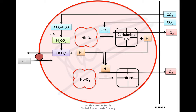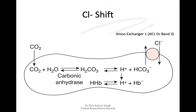There is formation of carbaminohemoglobin at the tissue level within the RBC. The carbon dioxide taken up combines with water in the presence of carbonic anhydrase — which is plentiful in RBCs — to form carbonic acid. This carbonic acid dissociates into hydrogen ions and bicarbonate ions. The hydrogen ions combine with deoxygenated hemoglobin, and the bicarbonate is exchanged with chloride — this is called the chloride shift.